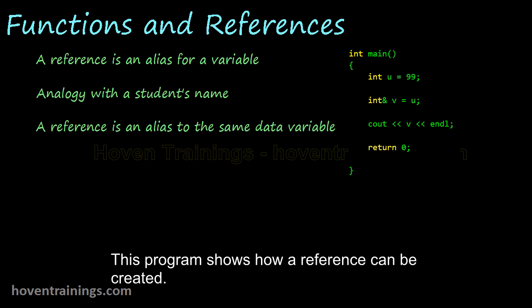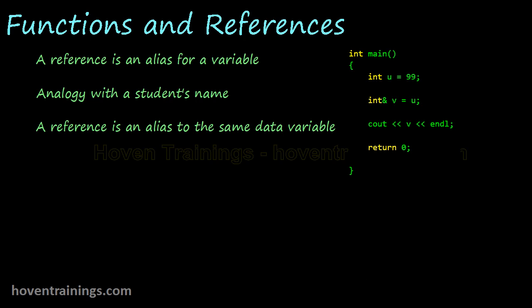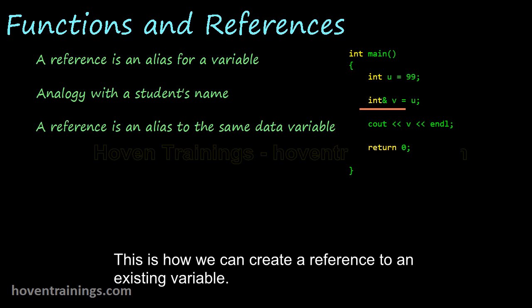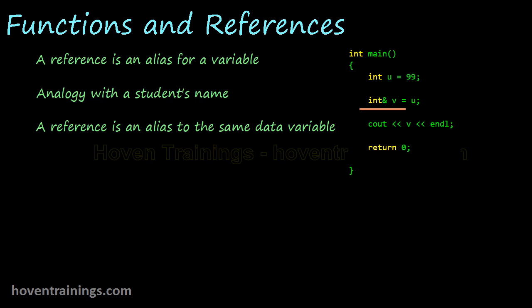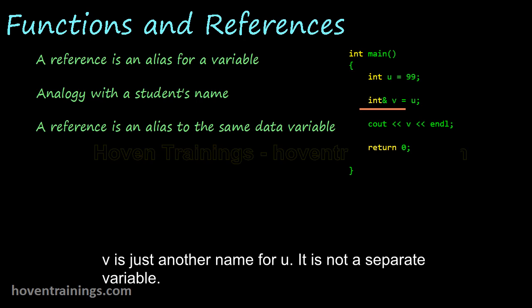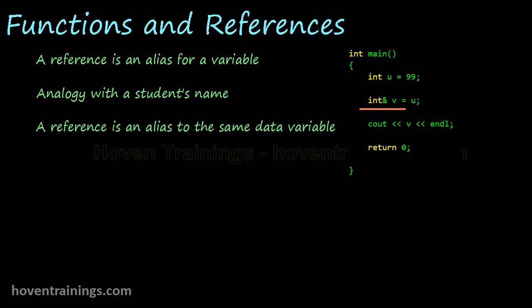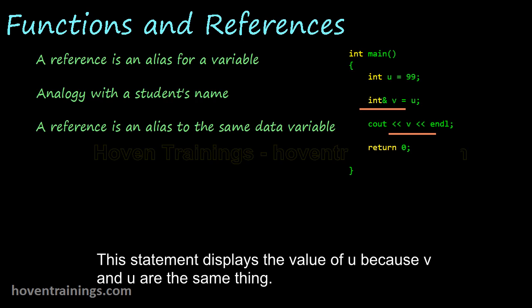This program shows how a reference can be created. This is how we create a reference to an existing variable — here V is a reference to U. V is just another name for U; it is not a separate variable. This statement displays the value of U because V and U are the same thing.